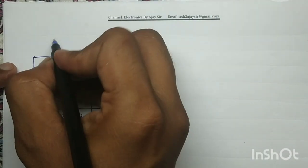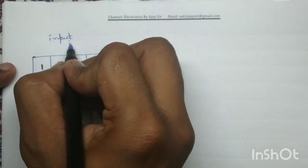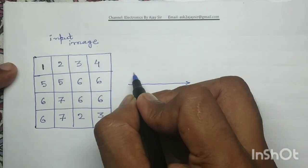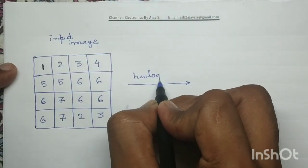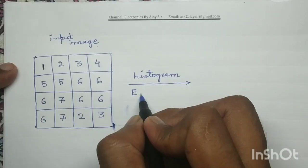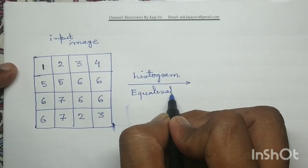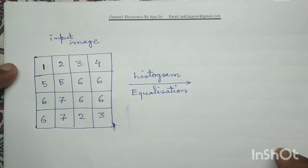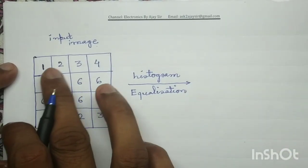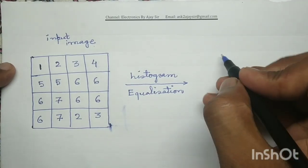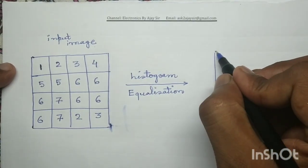The input image values are: 1, 2, 3, 4, 5, 5, 6, 6, 6, 7, 6, 6, 7, 2, 3. This is the input image. After performing histogram equalization, we draw the output image. The size of the input image is 4×4, so the size of the output image should also be 4×4.